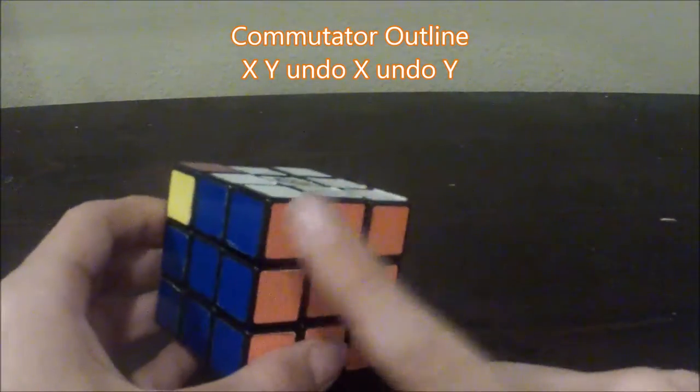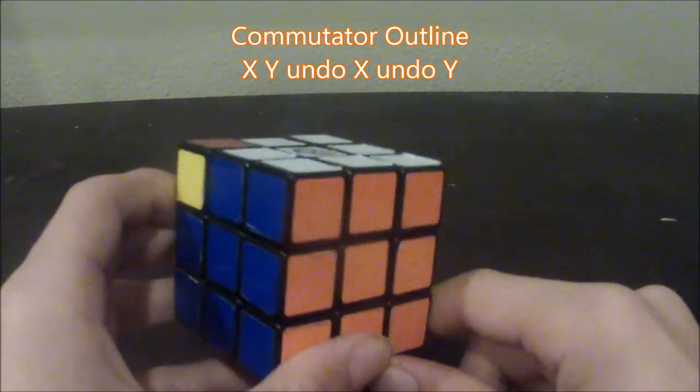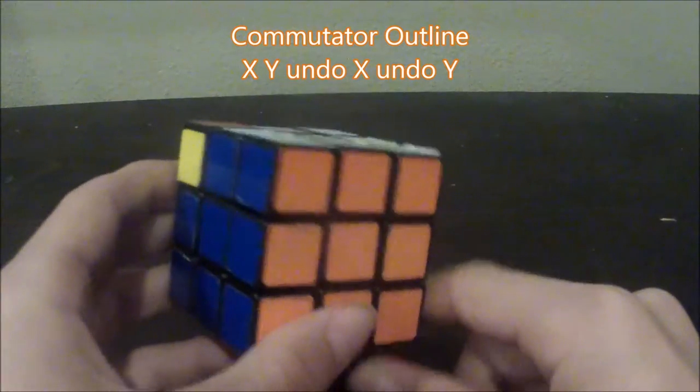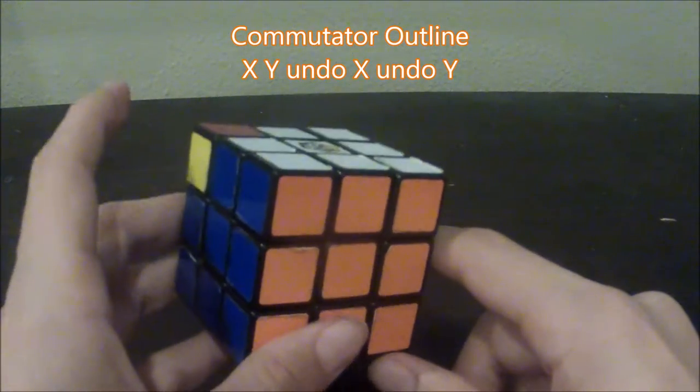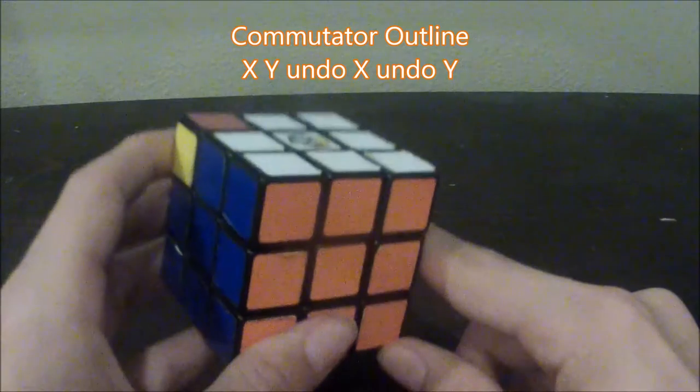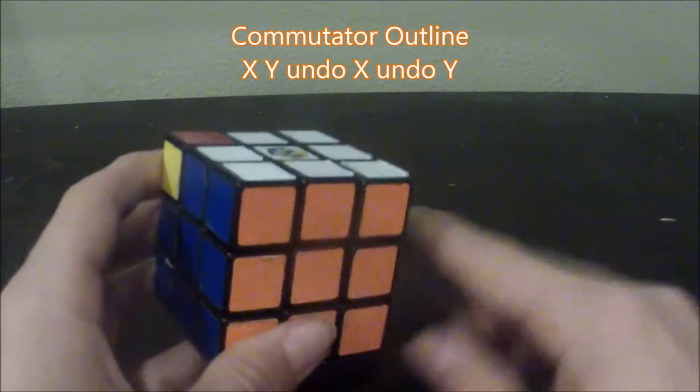On the top of the screen, I put the commutator outline there. That is the pattern that all commutators follow. As you can see, it's X, Y, undo X, then undo Y. Pretty simple.